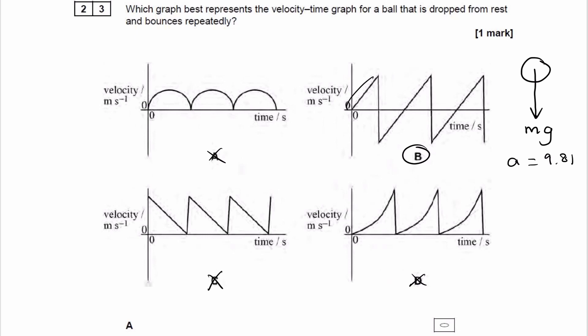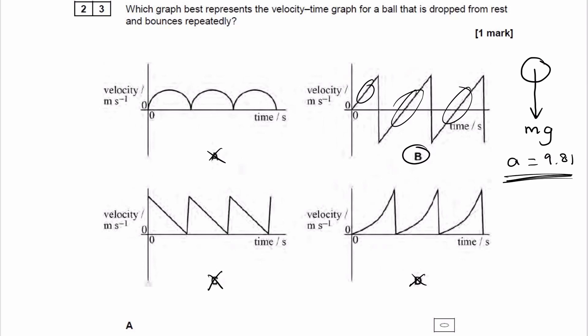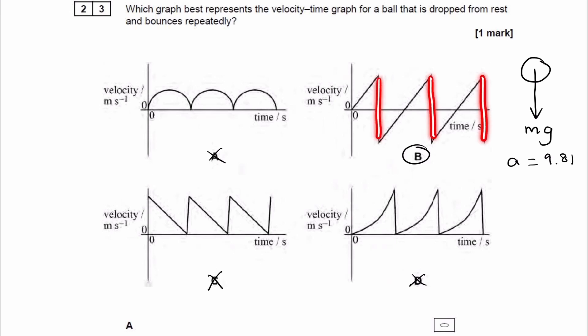So we have regions where the gradient is constant — these regions here. Those are the regions where just after the bounce, the ball goes up and then comes back down. When the ball is in the air, it is represented by these regions, and the gradient for those regions is 9.81. These other regions represent when the ball bounces.